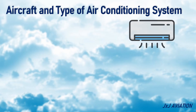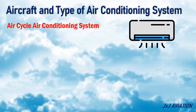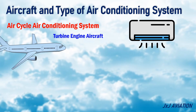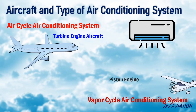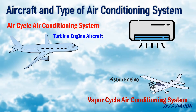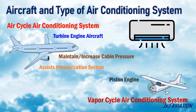Normally, the air cycle air conditioning system is found on turbine engine aircraft, and the vapor cycle air conditioning system is found on piston engine aircraft and a few turbine engine aircraft as well. The air cycle air conditioning air is used for maintaining or increasing the cabin pressure, meaning it assists the pressurization system. However, the vapor cycle air conditioning does not assist the pressurization system.